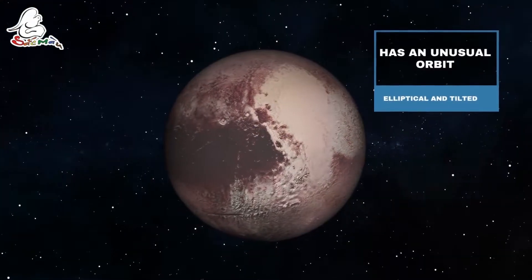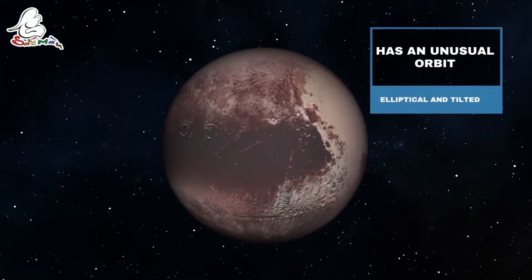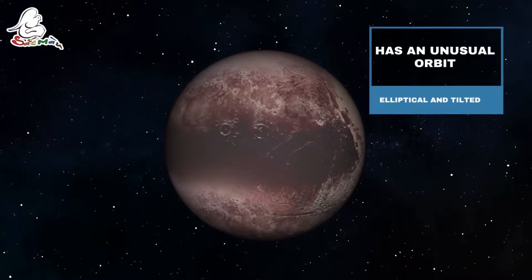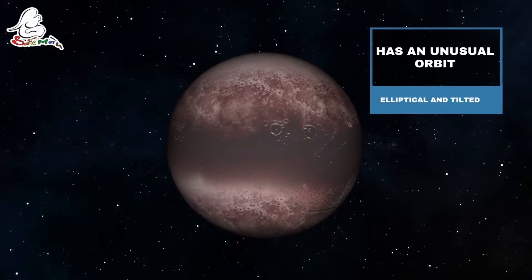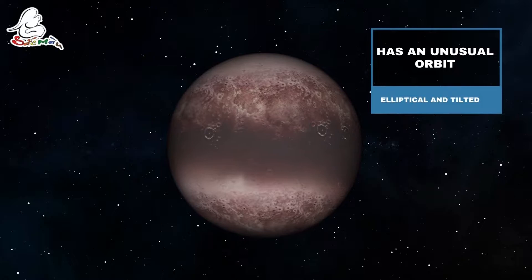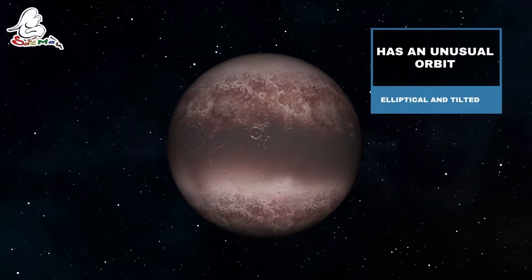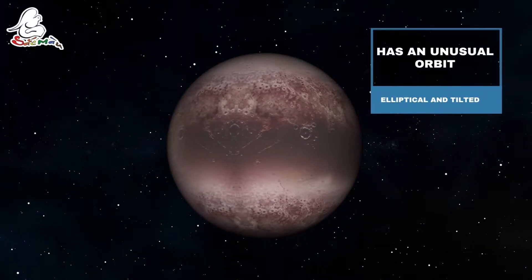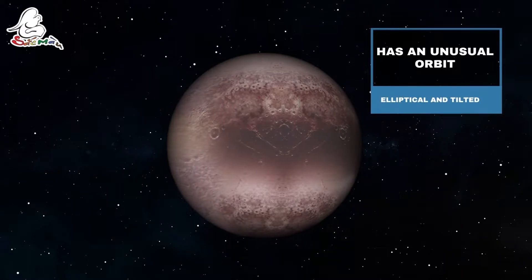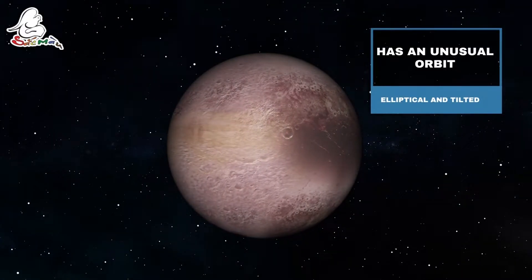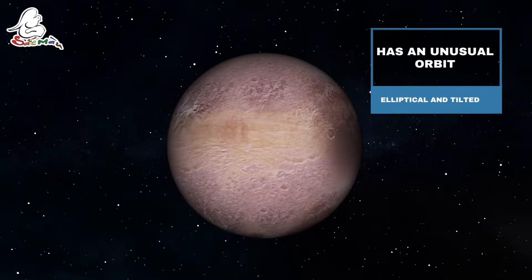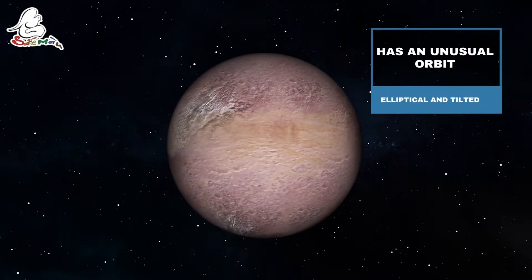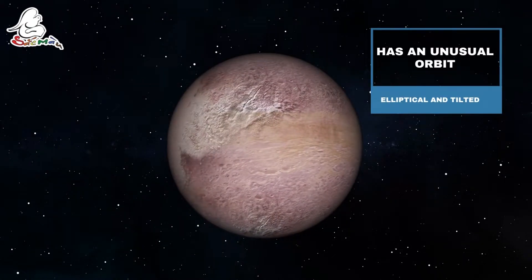Unlike the other eight planets in the solar system, the dwarf planet has an unusual orbit in terms of rotation. It is both elliptical and tilted. It would take 248 years to complete a 5.87 billion km orbit around the central star on average.